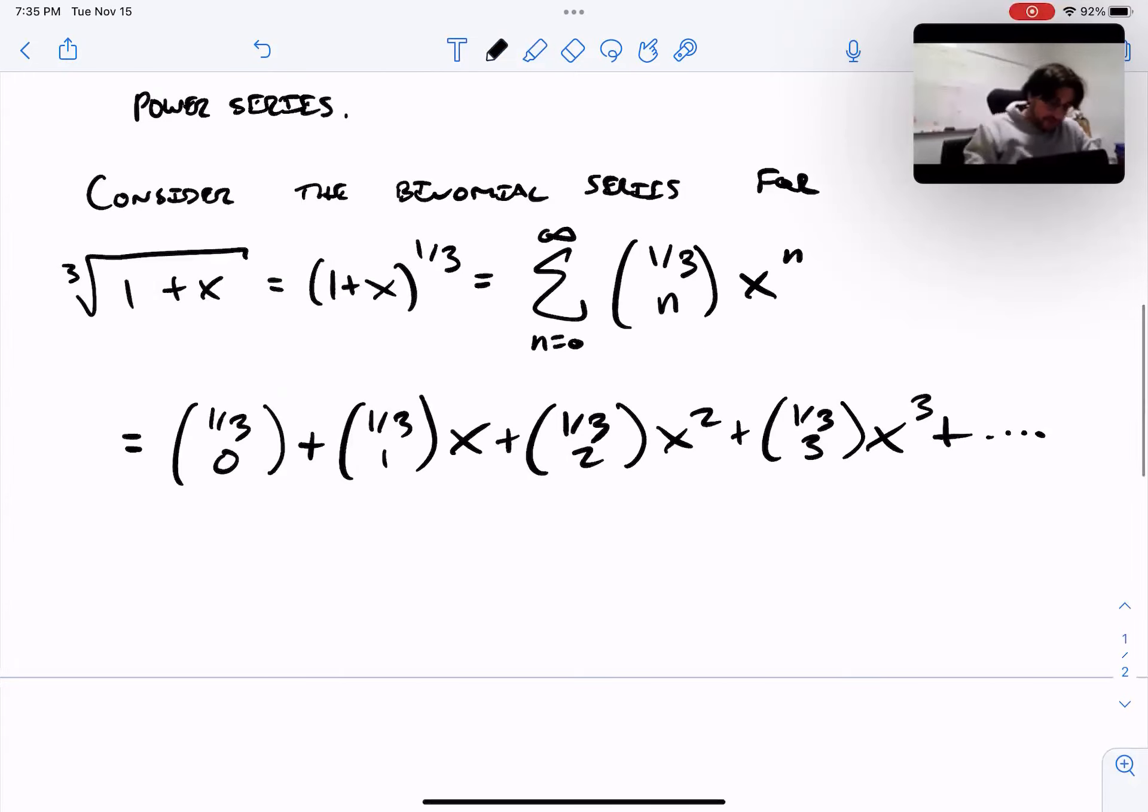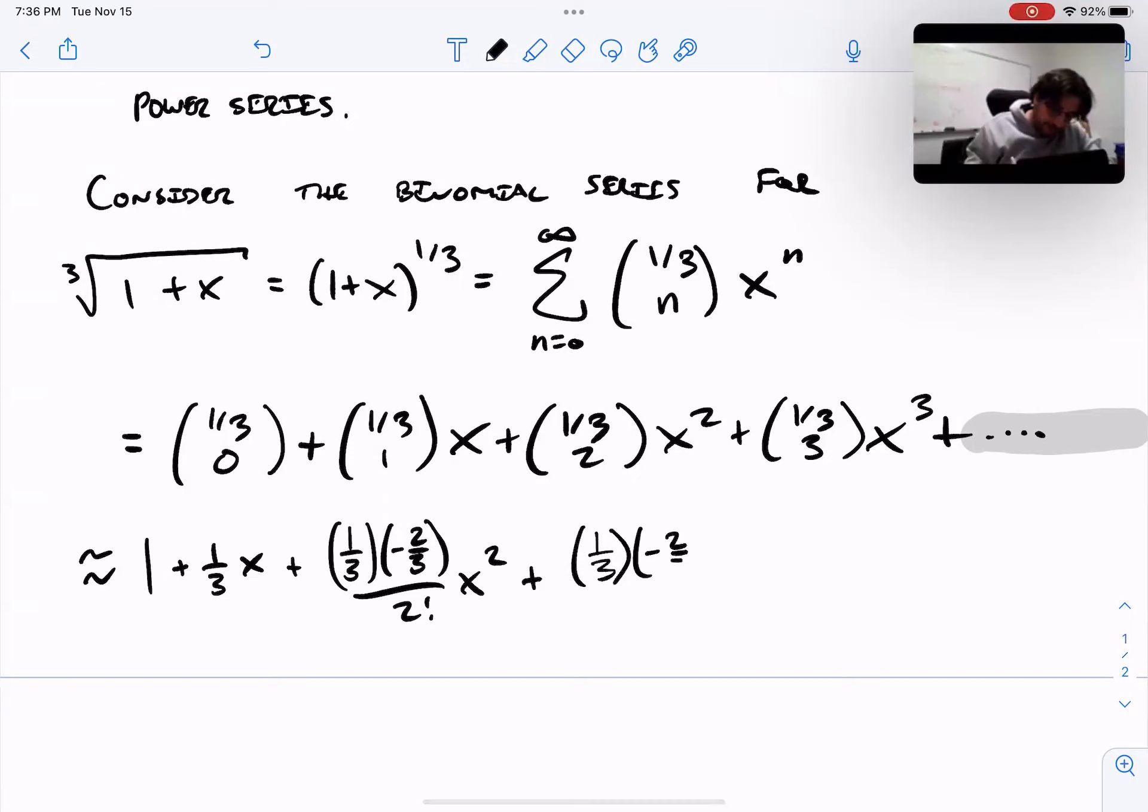But if you just want an approximation, we're just saying out to degree 3, you can just truncate all that. Just drop the dot dot dot. What are we going to approximate it by? Just those first four terms. So this is 1 + (1/3)x + (1/3)(-2/3)/2! x² + (1/3)(-2/3)(-5/3)/3! x³.